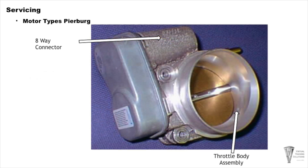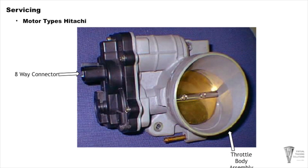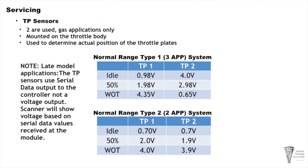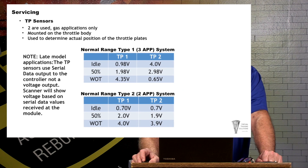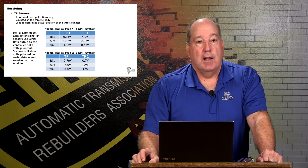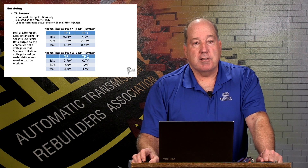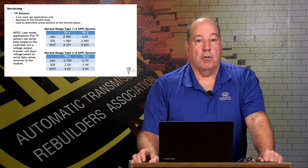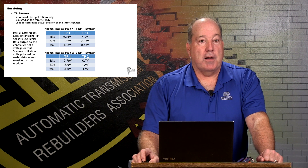Your TP sensors are mounted out at the throttle plates themselves. That's an input to tell us where the throttle plates moved to. We develop a command based on how hard you're stepping on the gas pedal, respond by controlling the throttle plates, and then confirm through the TP sensors mounted on the throttle body that the plates reached the desired position. There are different voltage outputs depending on which type of APP system you're running.